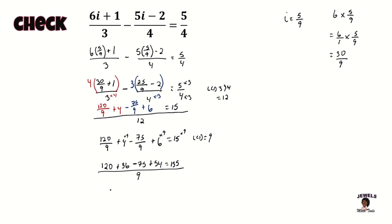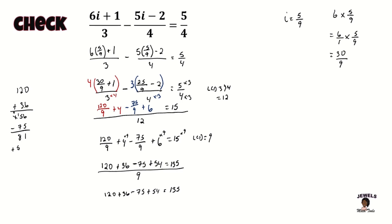Now that we have everything the same, let's begin checking our answer. Starting with 120 plus 36, that equals 156. Then 156 minus 75 — some of you may be using a calculator, and if you're allowed to use one, go ahead; it's still good to put in some brain power and do things manually from time to time, it helps keep the brain fresh. When all of this works out, both sides equal 135, which means our answer of i equals 5 ninths is correct.